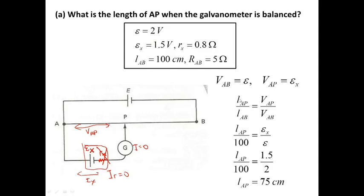Then we apply the ratio formula: LAP over LAB equals VAP over VAB. We substitute all the information — LAB, EX, and E — into it. Then we can find the length. The balance length AP is 75 cm.